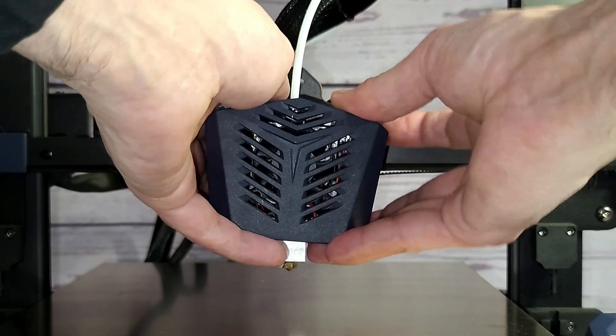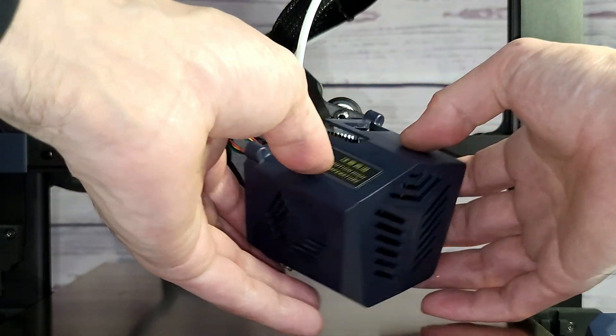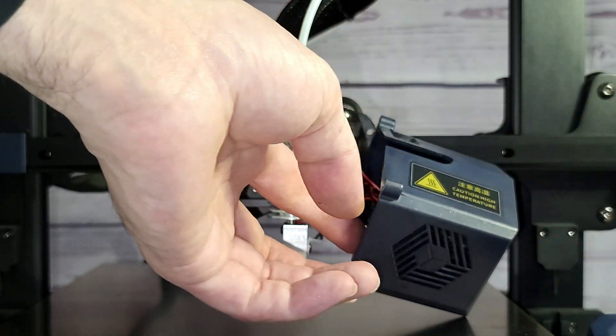With your harness removed, you need to remove four screws on the back of the shroud, and then you'll be able to pop the hotend shroud right off.